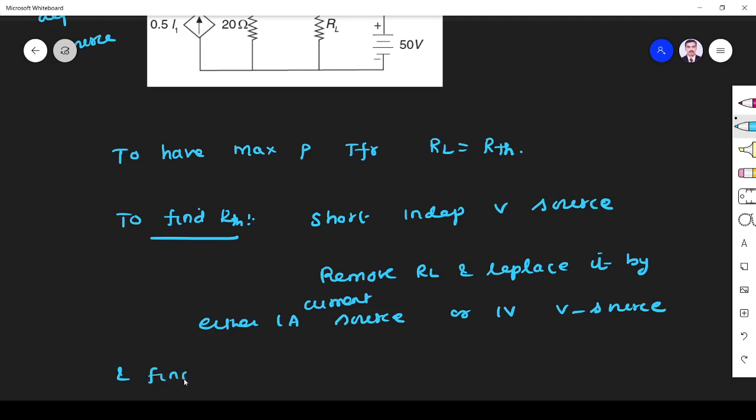And find V or I respectively. If you replace RL by current source, find voltage in the branch. If you replace RL by 1 volt voltage source, find current.